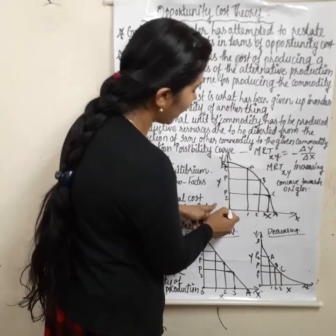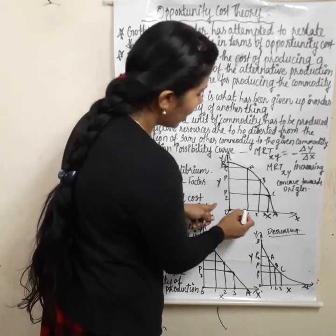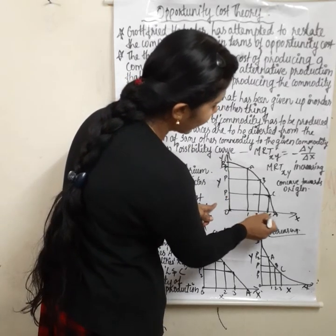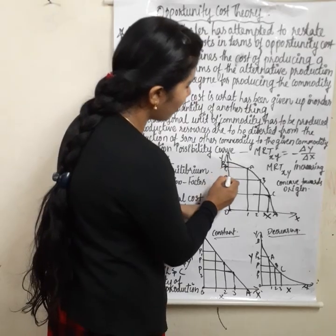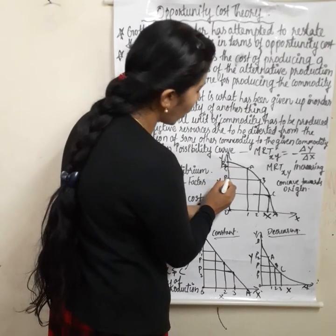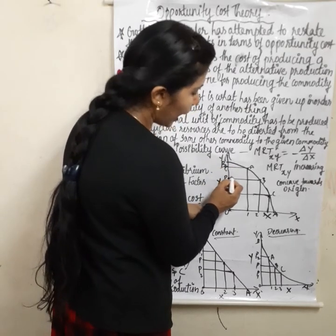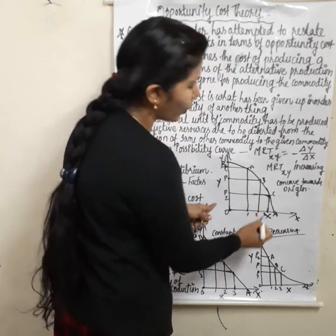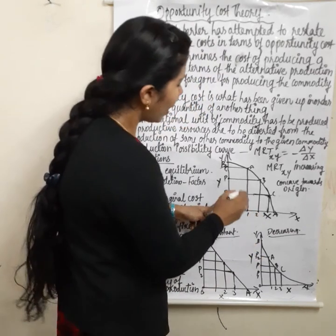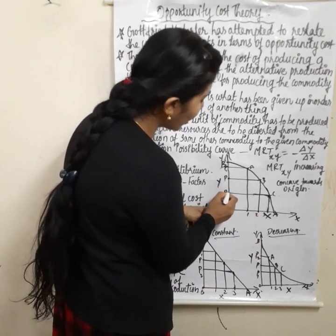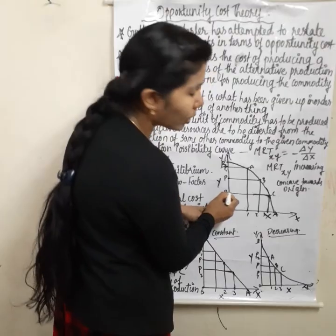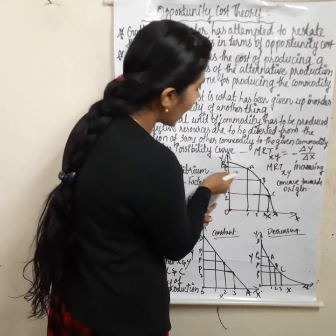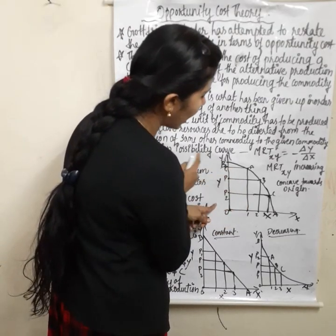At point P1, Y commodity and X commodity are produced. At the next stage, P2 is a different combination on the Y commodity axis. As we move from P1 to P2, more X is produced and Y is sacrificed.